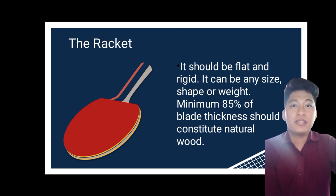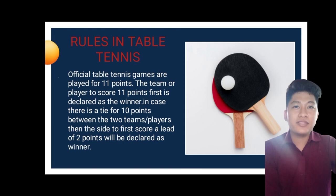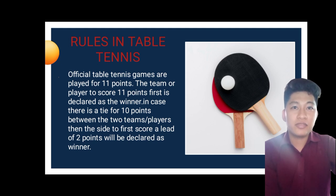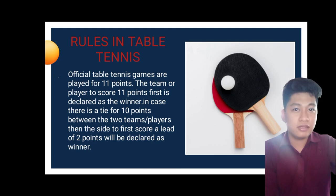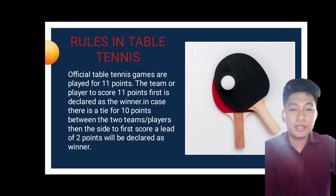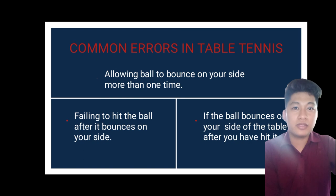In every sport there are rules to follow. Official table tennis games are played to 11 points — the first player or team to score 11 points is declared the winner. In the case of a 10–10 tie, the side that first scores a lead of two points wins. Each side serves for two points before the serve switches. After each game, players are allowed a brief interval of about one minute, and after every six points scored, players are permitted a toweling break.